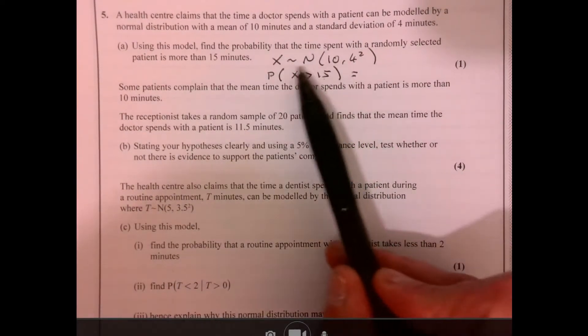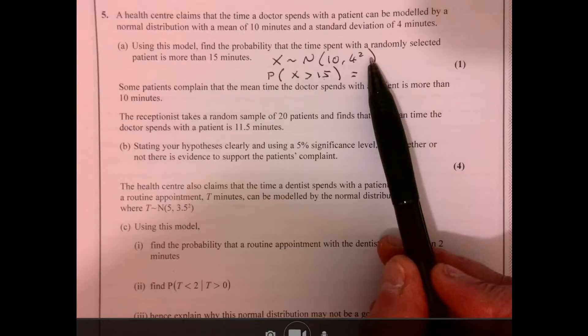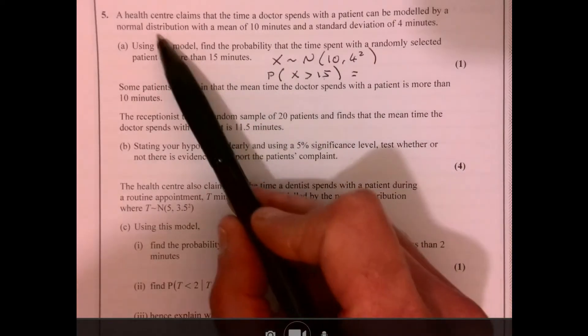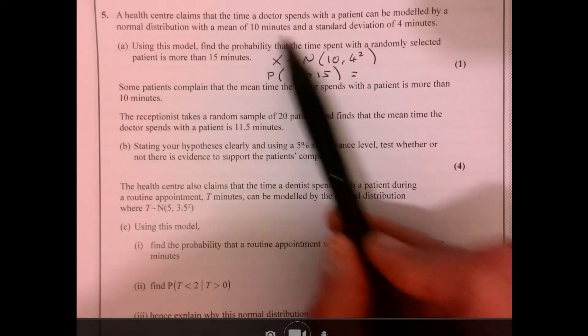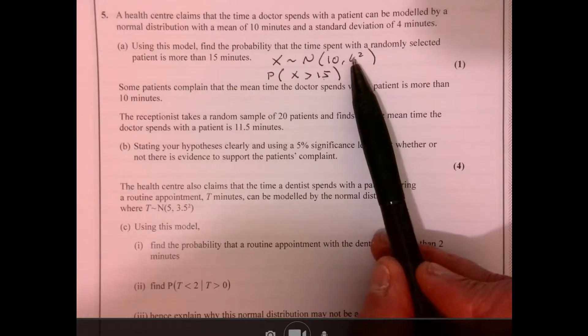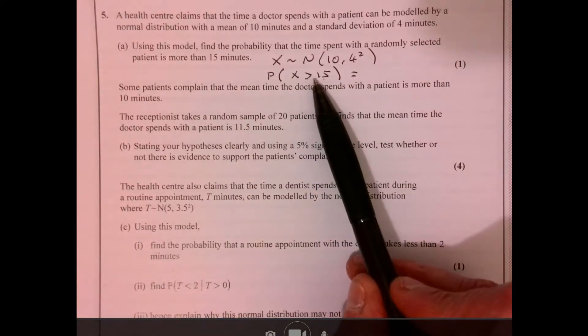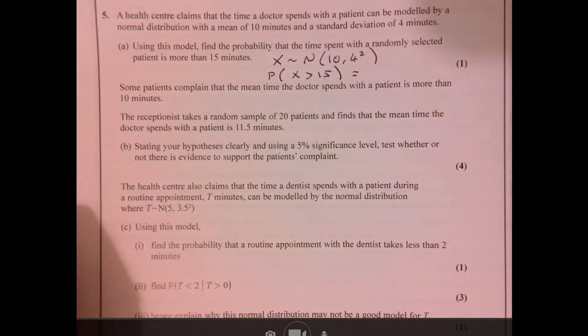Question 5. Let's just take out what's important. So total at 5 is a normal distribution, mean 10, standard deviation 4. And this is the question. What's the probability that x is more than 15? What are you going to do?